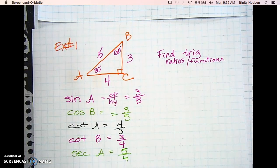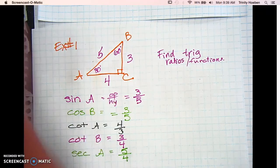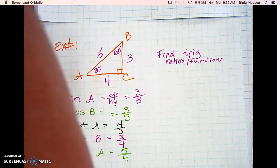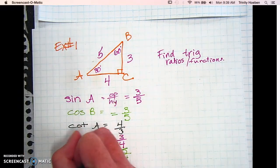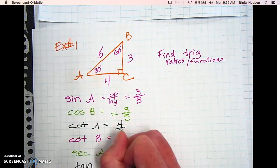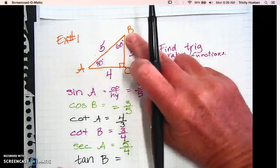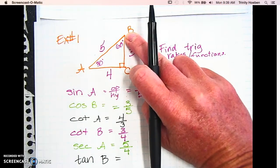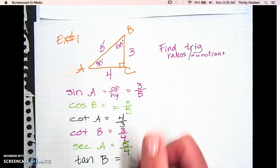So they're not hard, you just have to think about it. It takes a minute to go, oh okay, that and that, and then we flip it. Let's try one more and then move on — tangent of angle B. Starting from B, tangent is opposite over adjacent, so it's 4 over 3.